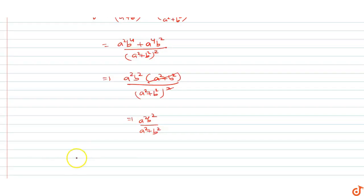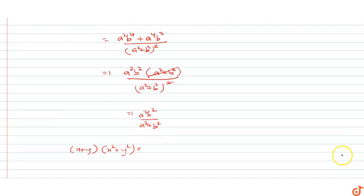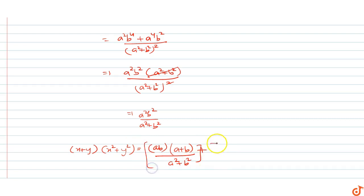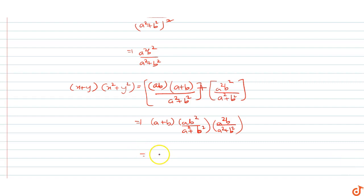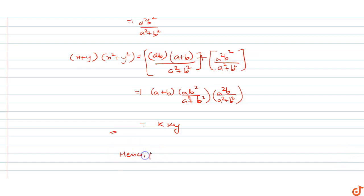Now computing (x plus y) into (x squared plus y squared): we have ab(a plus b)/(a² plus b²) multiplied by a²b²/(a² plus b²), which equals a³b³(a plus b)/(a² + b²)². And Kxy equals K times ab²/(a²+b²) times a²b/(a²+b²) equals K times a³b³/(a²+b²)². Since a plus b equals K, both sides are equal. Hence proved: (x plus y)(x² plus y²) equals Kxy.